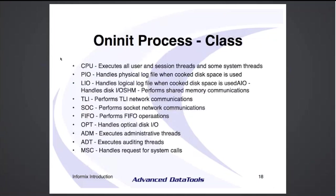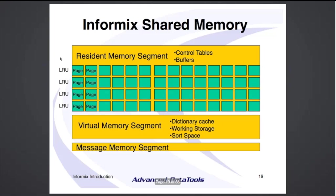Here's a list of the classes available. In shared memory, there are four blocks of memory Informix uses. In some older versions they show up as only three blocks because the resident memory segment and the buffers are combined. The resident memory segment is the first segment — it has the control tables, and if buffers aren't in a separate buffer segment, it will have the buffers.